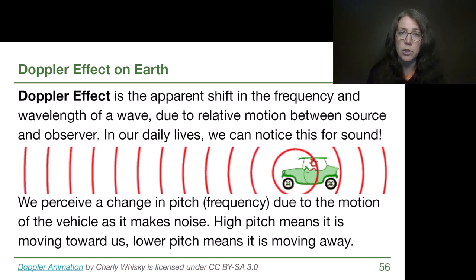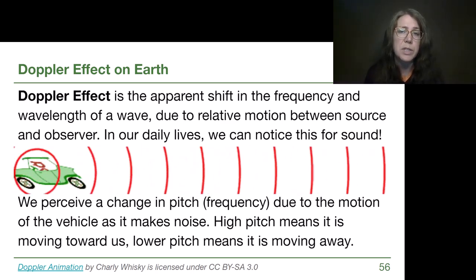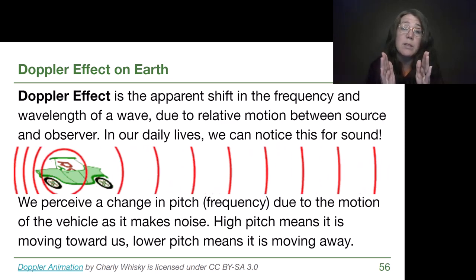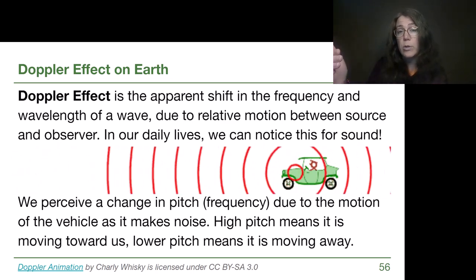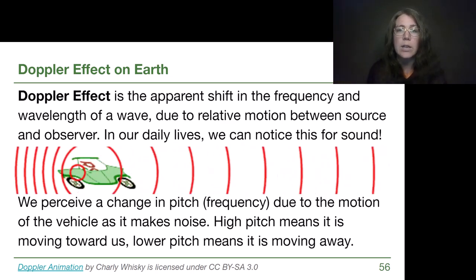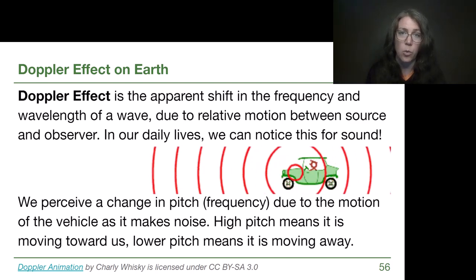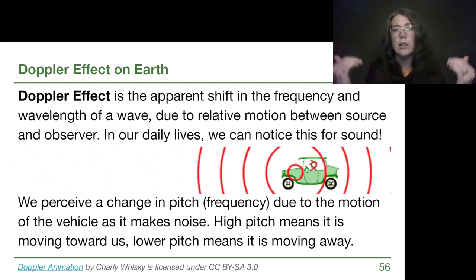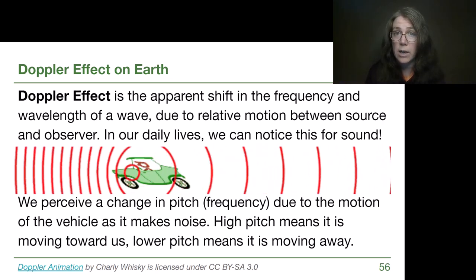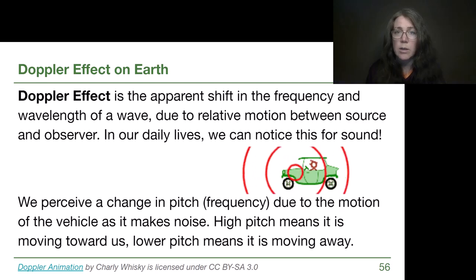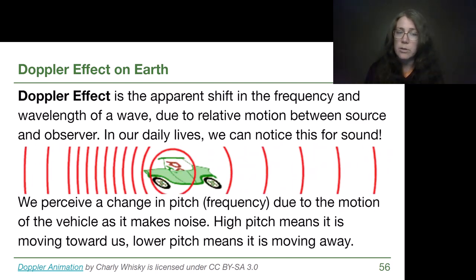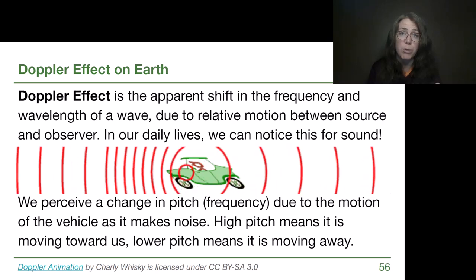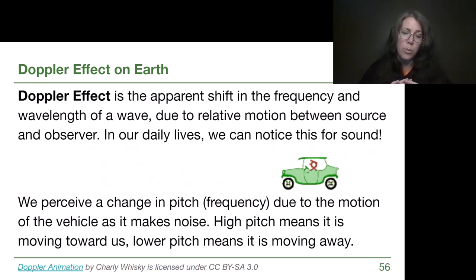But once the car starts to move left across the screen, an observer standing on the left is going to receive sound where all of the peaks of the waves are scrunched together. That means it's a shorter wavelength sound and that's a higher frequency or higher pitch sound. If instead someone were standing on the right side of the screen as the car drives away from them, they're going to receive sound that has much wider spread peaks, so that's a longer wavelength and a lower frequency or a lower pitch sound. Now we're not talking at all about the volume, certainly something will be loud if it's nearby, but that has nothing to do with the Doppler effect. We're talking about the specific changes to wavelength and frequency compared to the actual sound being produced and how it is observed.